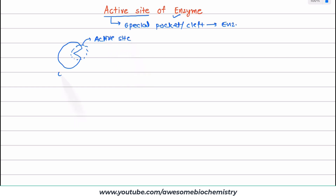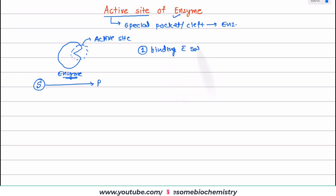Now, let us say this enzyme is required for catalyzing this reaction — that is, conversion of substrate S to the product P. So, the enzyme needs to first bind with the substrate. The first requirement is binding with the substrate.